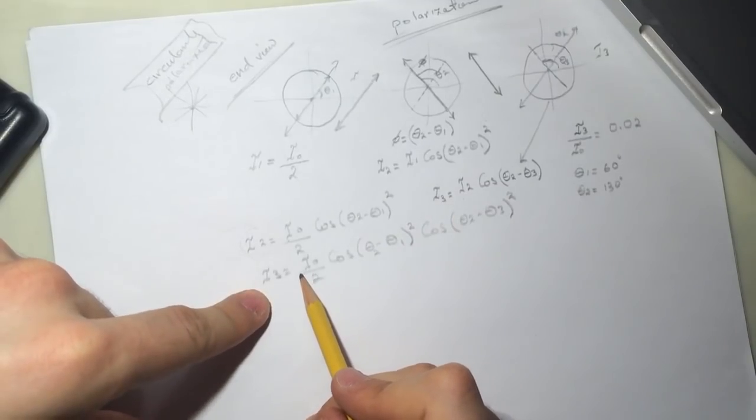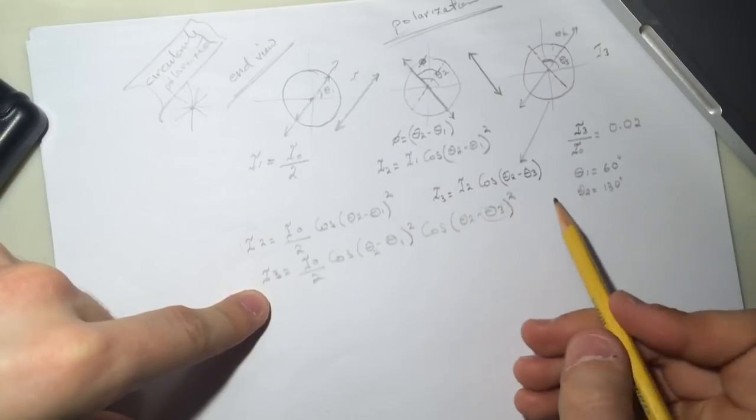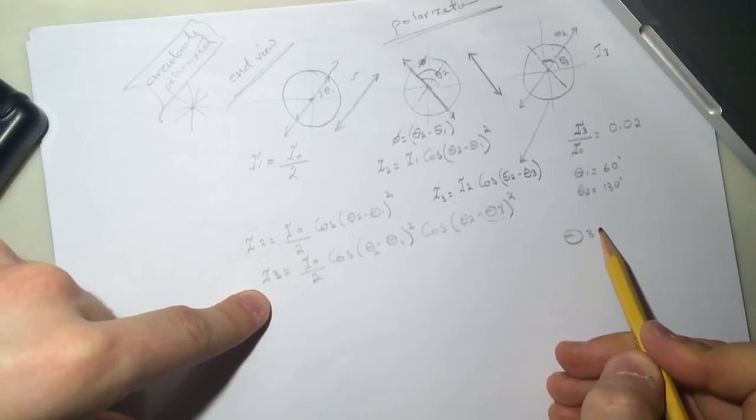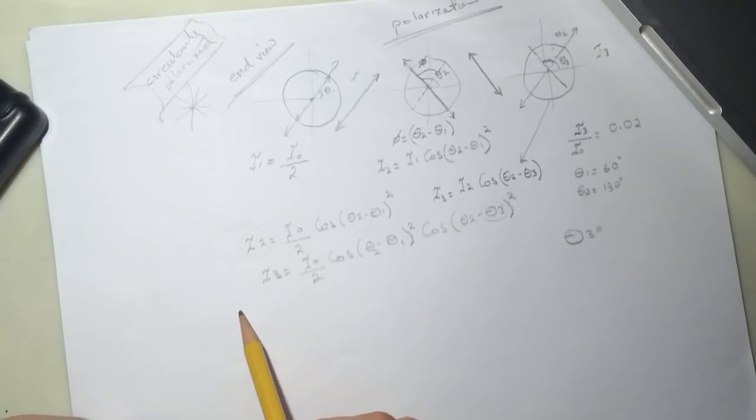All right, so since we know this ratio, let's take the ratio now, because we need to find the theta. The question is only asking about theta 3. So let's simplify here. So let's take, so it's i3 over i0, and so it's 2.